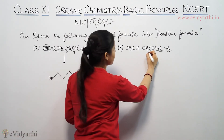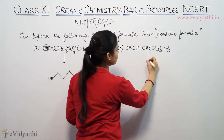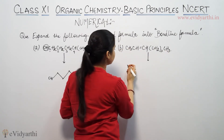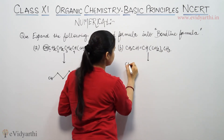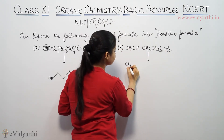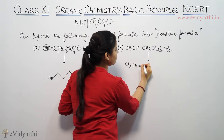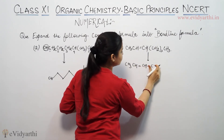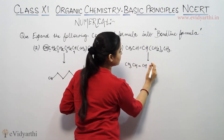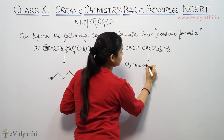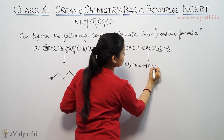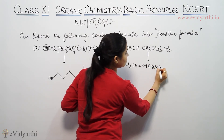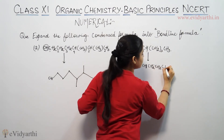Second question. We will represent the same thing. First of all, I will expand it. CH3 — CH — double bond CH — CH2 — CH — CH2, CH2, CH2 — there are 3 CH2 groups here.